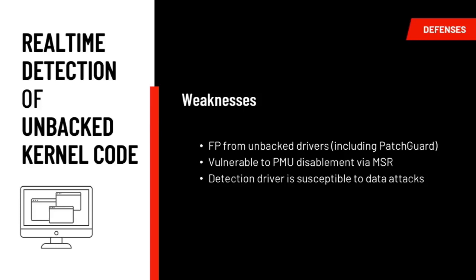There are weaknesses to this proof of concept. PatchGuard itself uses unbacked code to hinder reverse engineering, so catching PatchGuard would need to be addressed reliably — difficult given that PatchGuard is undocumented and subject to change. Another weakness: if an adversary can already execute kernel code and is aware of the system, they can disable the PMU by writing to MSRs, or disable interrupts entirely. Additionally, an attacker could do data attacks on our driver — IAT patching and similar techniques — since this is just software running in ring zero.